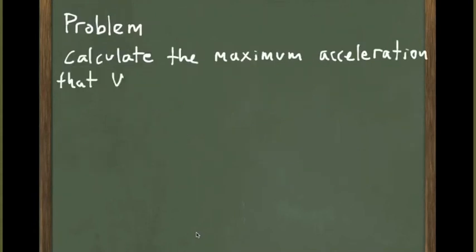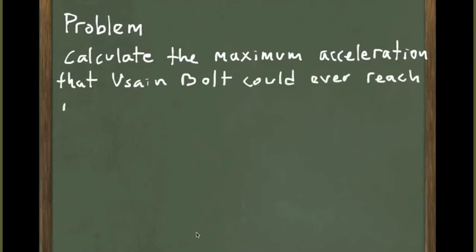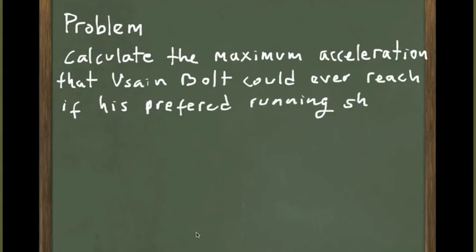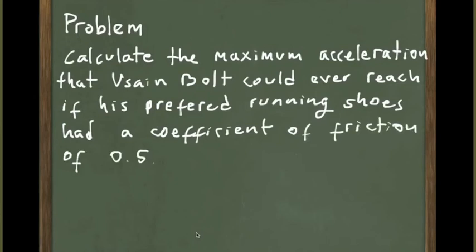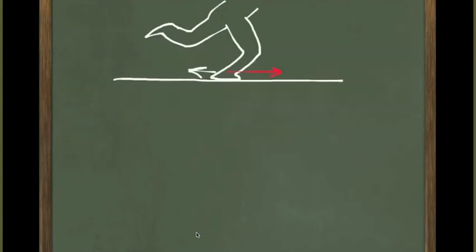Let's work on a problem using the force of friction. Suppose we want to calculate the maximum acceleration that Usain Bolt could ever reach if his preferred running shoes had a coefficient of static friction of 0.5. When running, you kick your leg back — the foot in contact with the surface is pushed back by the body. In the absence of friction, that foot would move backward. When there is friction, the static friction acts in the opposite direction, pushing you forward. This is the force that provides the acceleration necessary for a runner.